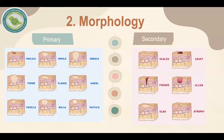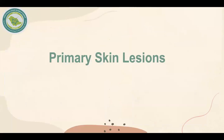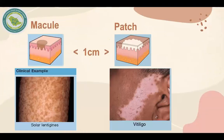Now let's move on to morphology, or identifying the primary skin lesion. A primary skin lesion is defined as an abnormal skin condition present at birth or acquired over a person's lifetime. A macule is a flat, non-palpable, circumscribed lesion that is less than one centimeter in diameter. An example of a macule is a solar lentigo, which is hyperpigmentation secondary to exposure to sunlight or ultraviolet radiation. When the primary lesion is flat, non-palpable, and circumscribed but more than one centimeter in diameter, we call it a patch. An example of a patch is this patch of vitiligo.